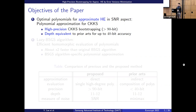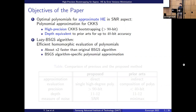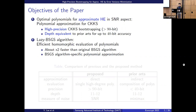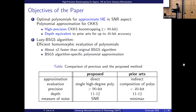This achieves equivalent multiplicative depth to prior works. We also proposed an algorithm for efficient homomorphic evaluation of polynomials, which is called the Lazy BSGS (baby-step giant-step) algorithm. This is about two times faster than the original baby-step giant-step algorithm. We also proposed a polynomial approximation specific to the baby-step giant-step algorithm.